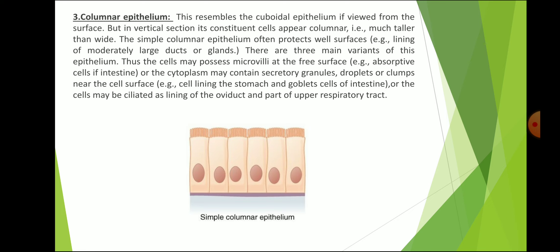Simple columnar epithelium protects wet surfaces, such as the lining of large ducts of glands. There are three main varieties of this epithelium: the cells may possess microvilli at the free surfaces — for example, absorptive cells of the intestine; or the cytoplasm may contain secretory granules, droplets, or clumps near the surface — for example, cells lining the stomach and goblet cells of the intestine.